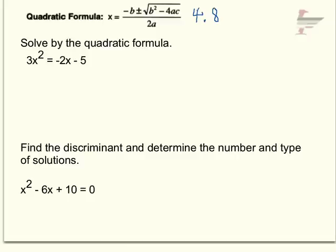The first one is solving by the quadratic formula, and hopefully you caught that it's not quite in standard form. So I'm going to add the 2x and the 5 over to one side. So I really have 3x squared plus 2x plus 5. And I know that a is 3, b is 2, and c is 5.